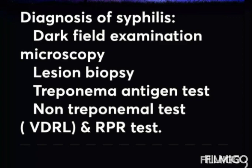For diagnosis of syphilis, first take a history of a sexually active person. Dark field examination microscopy is the most useful method for identifying spirochetes in primary and occasionally secondary syphilis. Treponema pallidum is a motile bacteria. However, it is not reliable for oral lesions since the normal oral flora contains non-pathogenic treponema which are difficult to distinguish from Treponema pallidum.